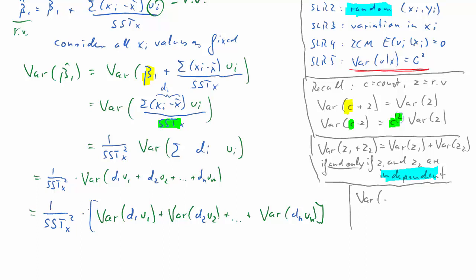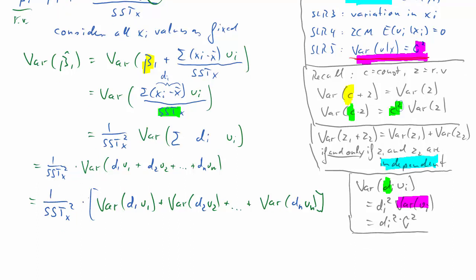So now we need to further see how we can simplify it. So we have lots of variance di times ui terms here. Now we can take the di out. It only involves x's which are considered fixed. But we need to square it according to the previous rule we applied. And then we are left with the variance of ui and that's sigma squared as per assumption 5. So we'll have di squared times sigma squared here.